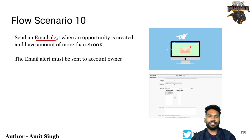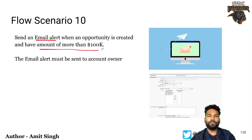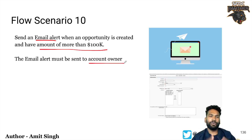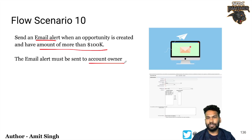The scenario is: we will send an email alert whenever an opportunity is created with an amount of more than $100k. We are going to send this email alert to the account owner — so whoever is the account owner for that particular opportunity, we are going to send the email alert to that particular user.